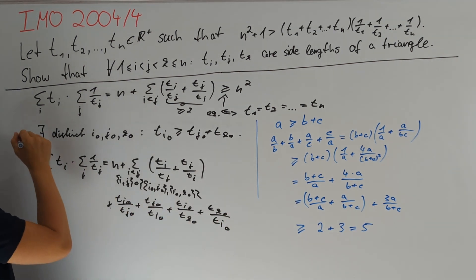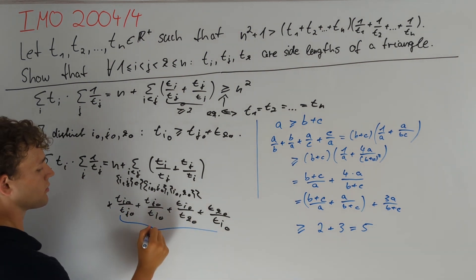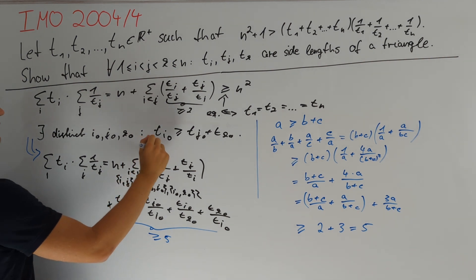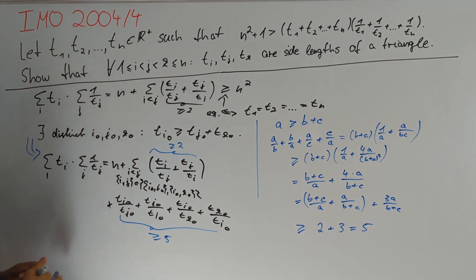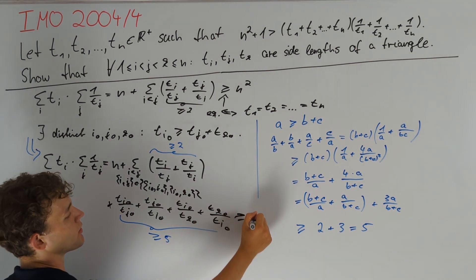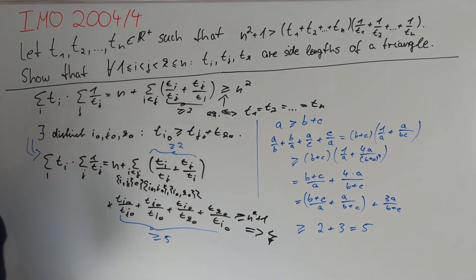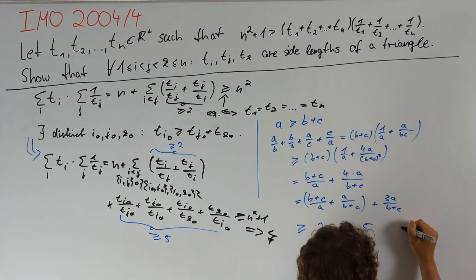That is, by our assumption, at least equal to 5. Again, we bound those terms from below with 2. Therefore, in total, we obtain that all of this is greater than or equal to n² + 1, which implies a contradiction. Our assumption was wrong and therefore we have indeed proven that this is true. We are done.